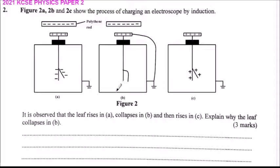The leaf collapses in B because, as I've said, the earthing causes electrons to flow to the earth, leading to reduced charges. So you say 'due to earthing' and you can explain: electrons flow to the earth.